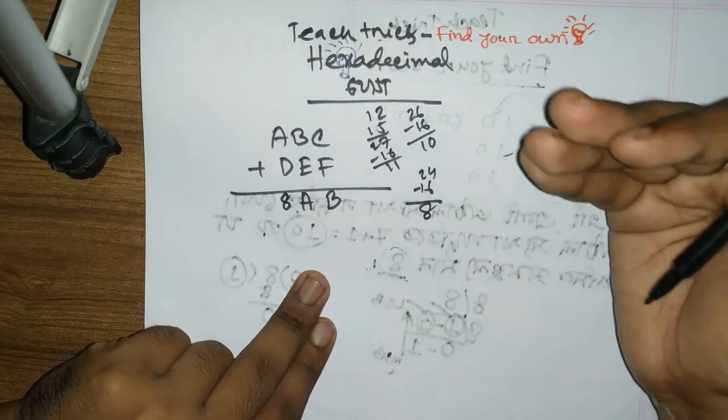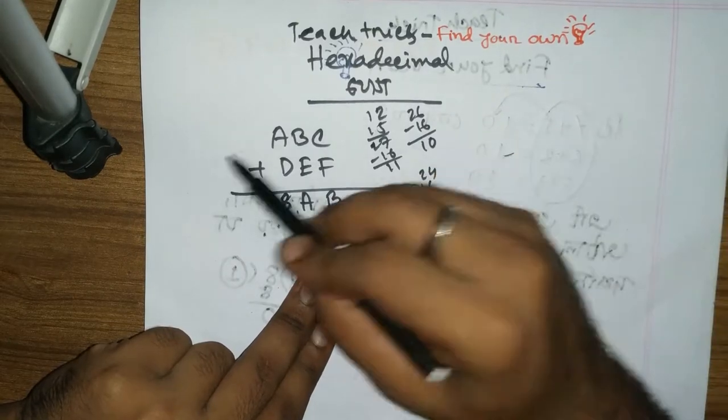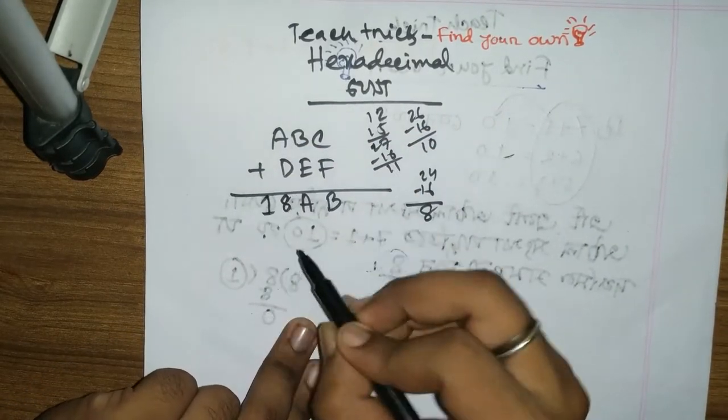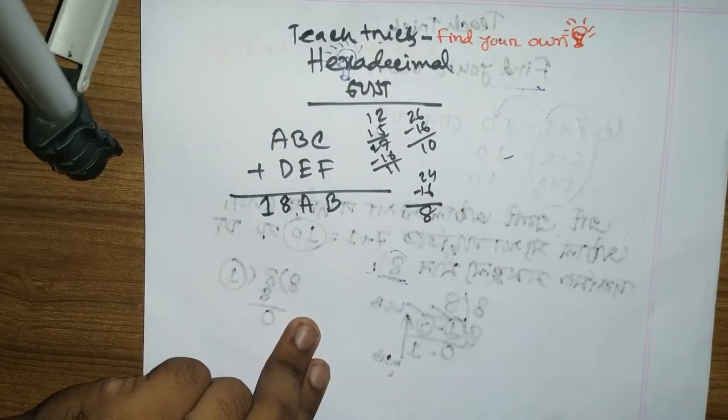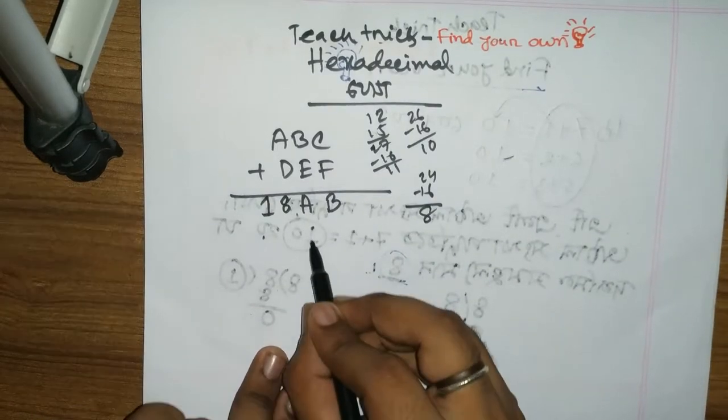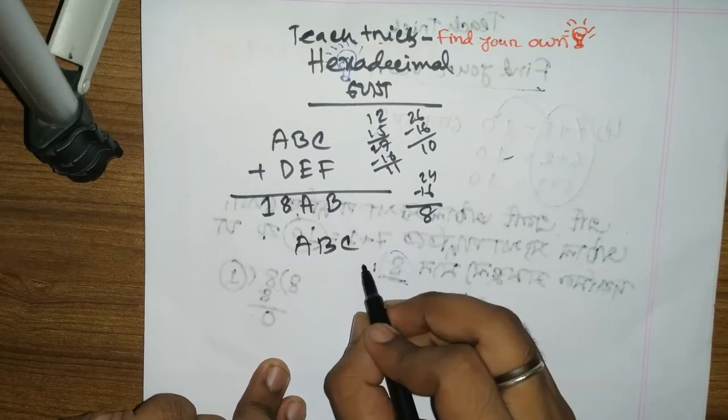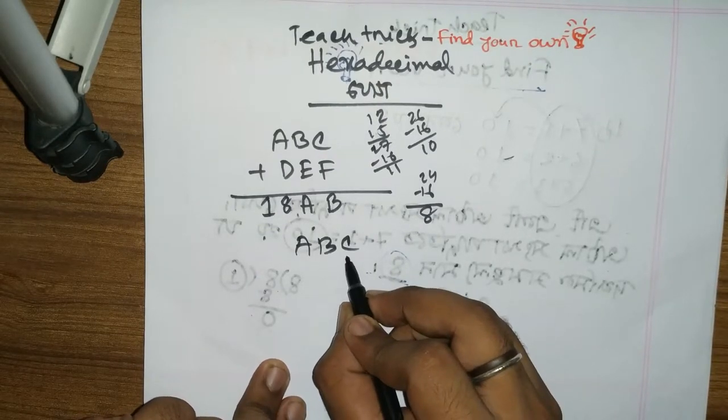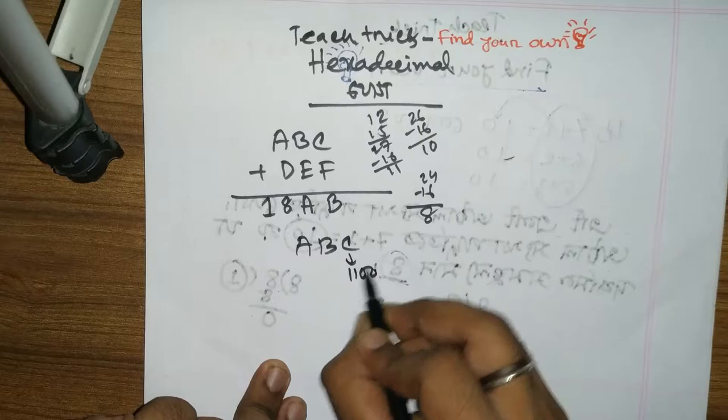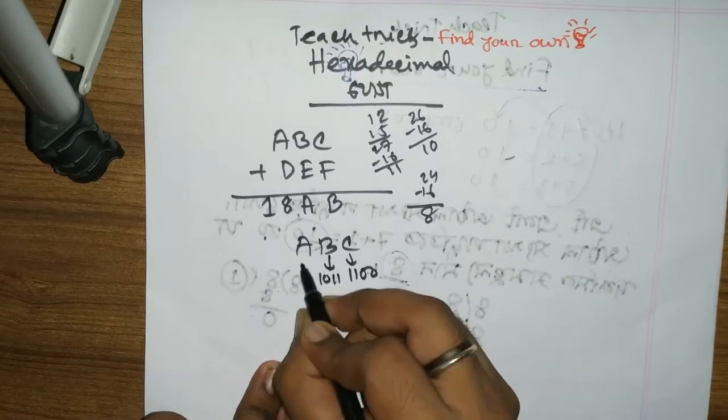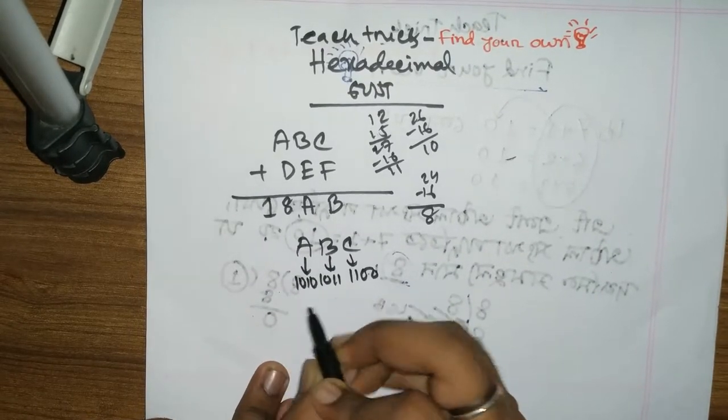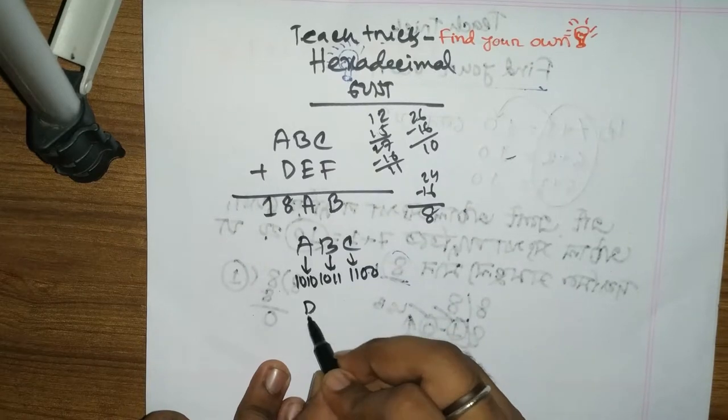Here we have the question. The answer is AB. The first question here is AB. The number is AB. If C is D, B is D, D is D.